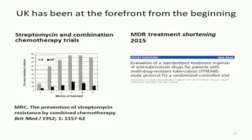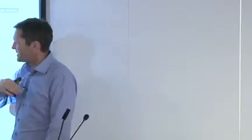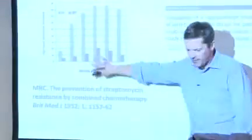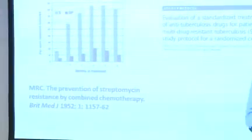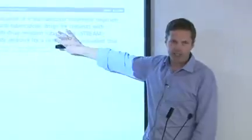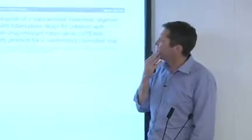I want to finish by highlighting that the Medical Research Council — now based at UCL's Clinical Trials Unit — was involved right from the outset: the first streptomycin trial in 1948, the first combination treatment trial in 1952. TB has to be treated with combinations and the MRC was doing it then and is doing it now, running the trials that will determine what we do with MDR-TB. The UK has really been at the forefront of TB from the start.